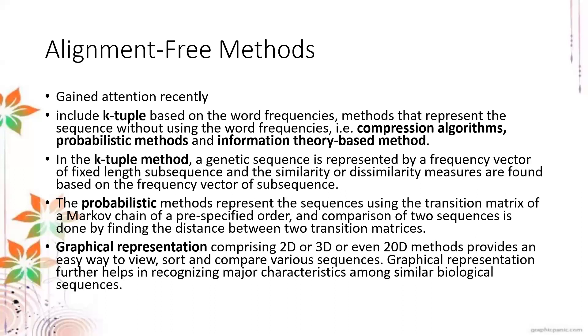In a K-tuple method, a genetic sequence is represented by a frequency vector of fixed length subsequence. You have a full-length sequence and find a fixed length subsequence. It can be a sequence of 5, 10, out of 100, a sequence of 100 characters. Then find the frequency - how often does this particular 5 or 10 character string occur in your sequences? Across all sequences you want to compare, how often do you see those characters in that particular order or sequence?